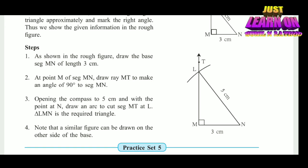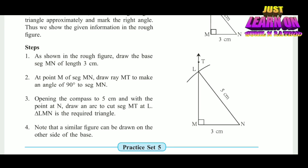Step 2: At point M of segment MN, draw ray MT to make an angle of 90 degrees to segment MN. Then, opening the compass to 5 cm and with the point at N, draw an arc to cut segment MT at L. Triangle LMN is the required triangle.